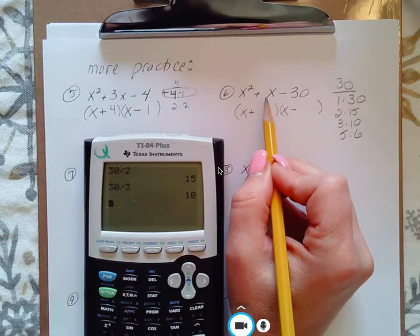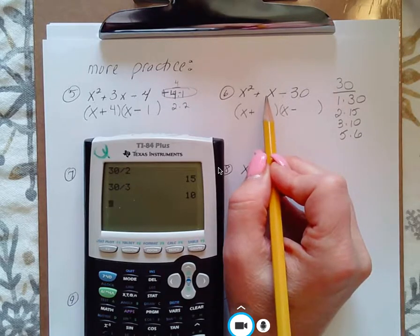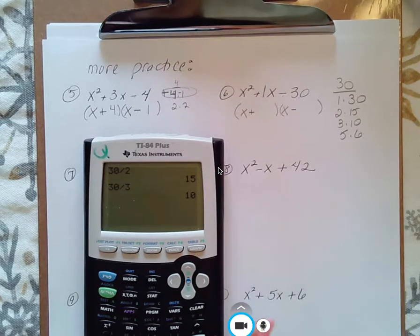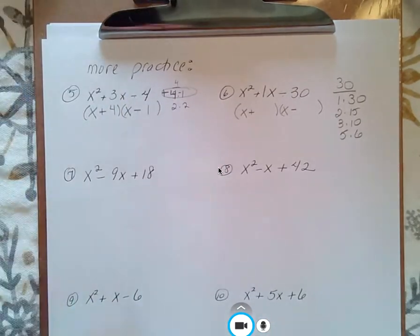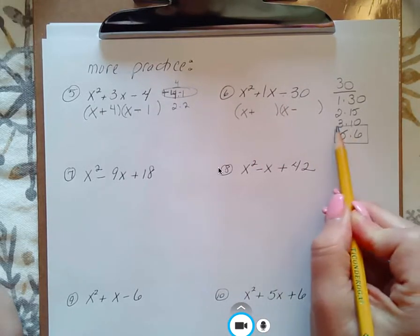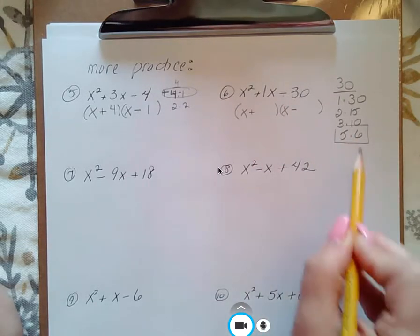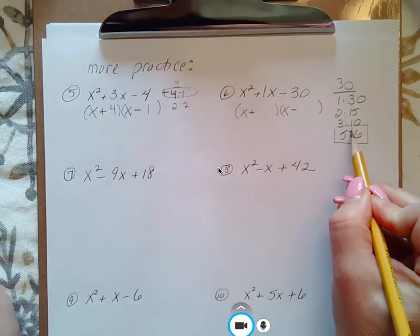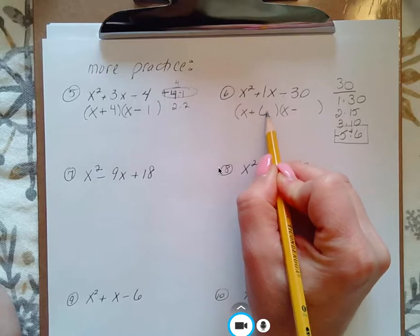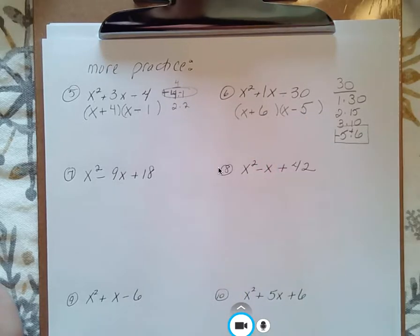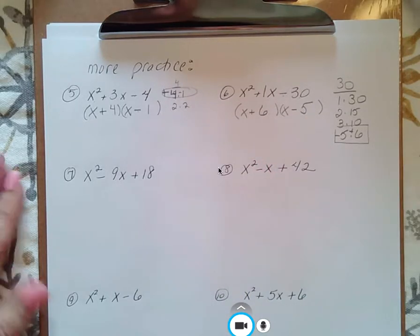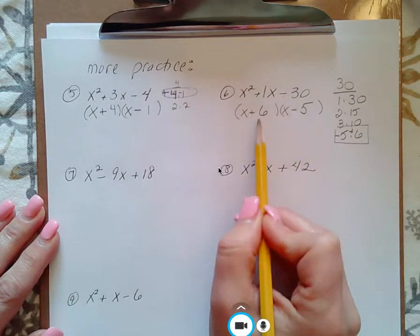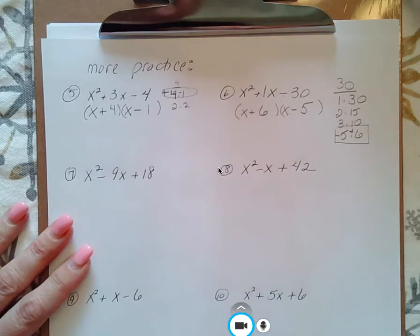Well, when there's no number, no coefficient of x, write in the 1. It's that understood 1. So write in the 1. So now we know that we're subtracting to get 1. Here's that pair of numbers. 5 and 6 will subtract to give you 1, and it's a positive 1. So the positive goes with the larger number, goes with the 6, minus 5. You can always, if you want to, FOIL or multiply these out, double distribute, and you will get back to your original.